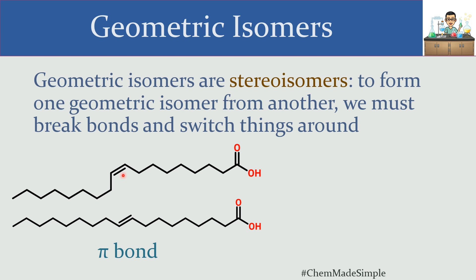Here's an example in which a pi bond is something that needs to be broken in order to make this molecule look like this one. Notice that this carbon right here is sort of facing down and this carbon here is kind of going up, so the only way to make these two molecules look alike is to break this pi bond and switch things around.